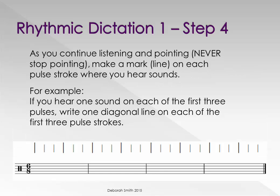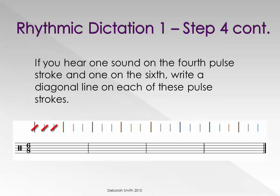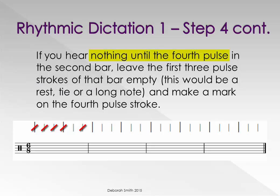As you continue listening and pointing — never stop pointing — make a mark on each pulse stroke where you hear sounds. For example, if you hear one sound on each of the first three pulses, write one diagonal line on each of the first three pulse strokes. If you hear nothing until the fourth pulse in the second bar, leave the three pulse strokes of that bar empty. This would be a rest, tie, or long note.